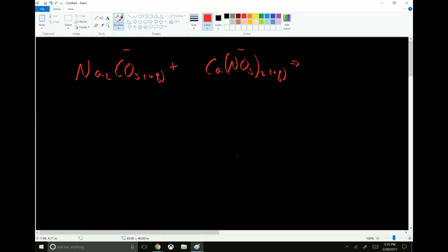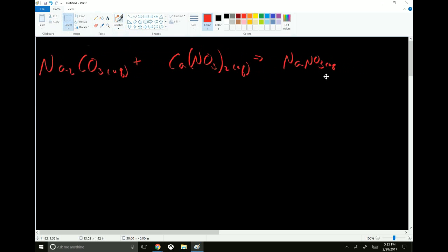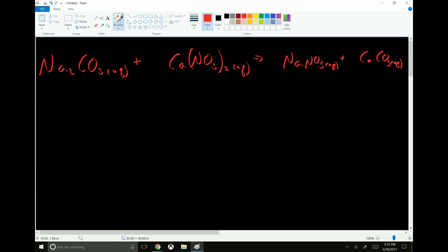They are going to just swap partners. So you're going to end up with NaNO3 aqueous. Oh dear, I didn't leave quite enough room, so let's shift this over to the left. Aqueous plus calcium carbonate aqueous. Now you can solve this less directly just by going through and keeping track of all the individual atoms: sodium, carbon, oxygen, calcium, nitrogen. You could do that. It would be a little easier to do it by keeping track of your ionic species.